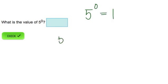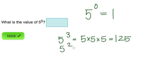And let's review why. 5 to the 3rd power is 5 times 5 times 5, which is equal to 125. 5 squared is equal to 25. And that's because we divide 125 by 5 and we get 25.